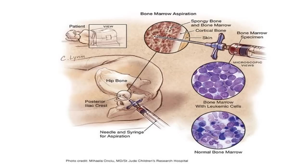A picture of a bone marrow aspiration shows patients lying comfortably with the posterior iliac crest being accessed. The needle passes through the skin, through the cortical bone, into the spongy bone and into the bone marrow where the specimen is drawn. Under a microscope, leukemic cells look much larger and very different from normal bone marrow appearance.